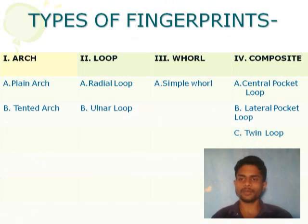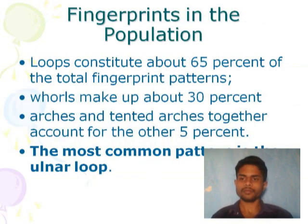There are four fingerprint pattern types: the first one is arch, the second one is loop, the third one is whorl, and the fourth one is composite. Loop constitutes 65% of the population, whorl is 30% of the population, arch is 2–5% of the population, and composite is present in 2–3% of the population.